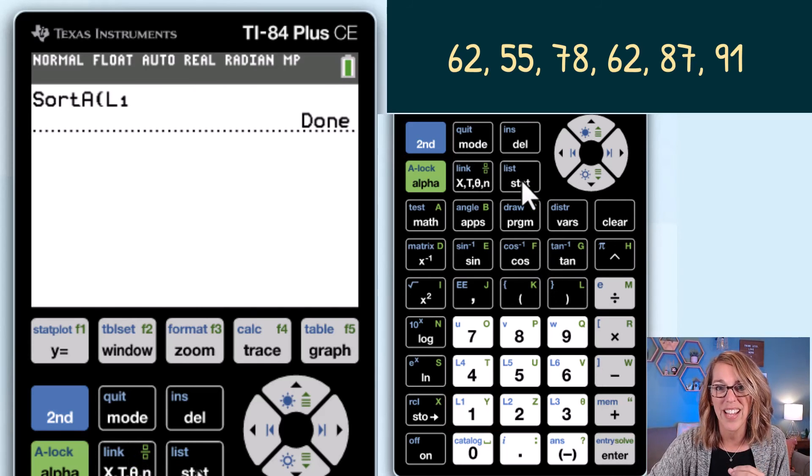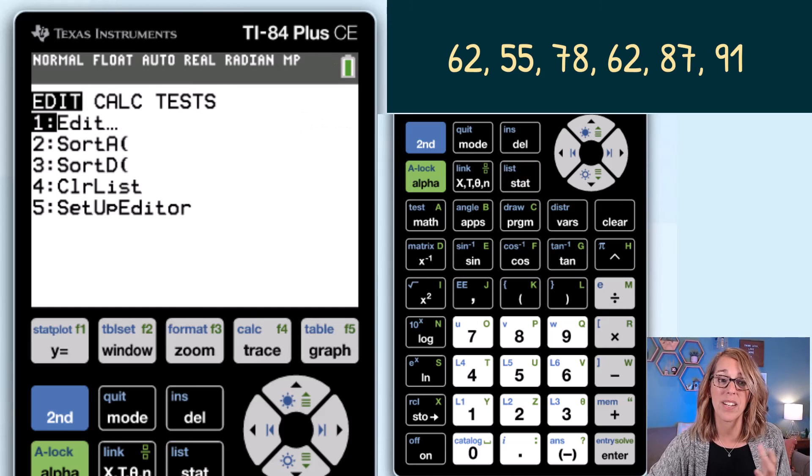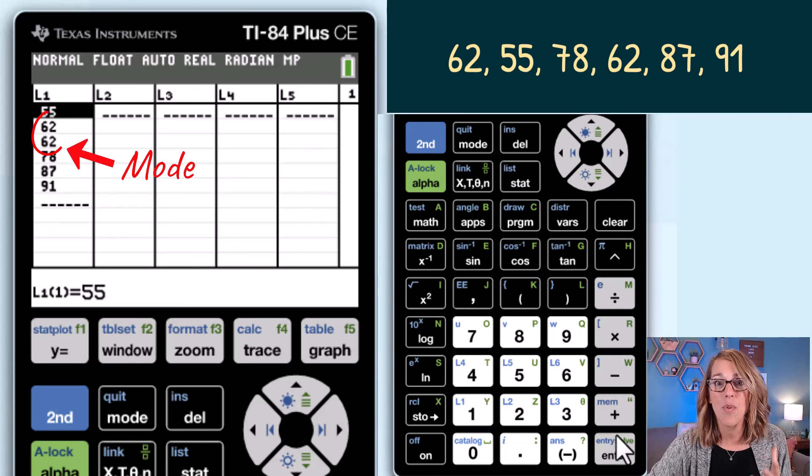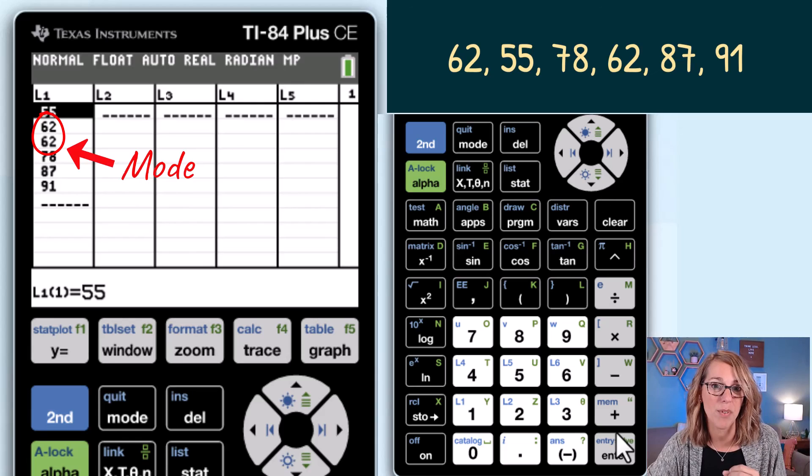Let's go view the data by going back into stats. So I click stats and I'm going to edit so I click enter to edit and here's my list in order and we can more easily see that 62 is the mode because it shows up the most frequently.